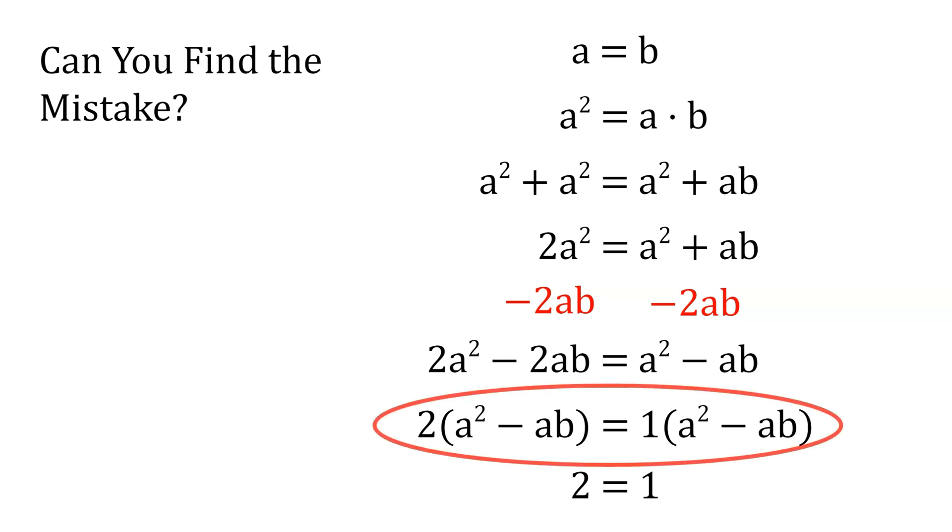The problem appears in this step, where we divide both sides by a squared minus 2ab. However, division only makes sense when the number you are dividing by is non-zero. In this proof, a squared minus ab equals 0, because we assumed in step 1 that a equals b.